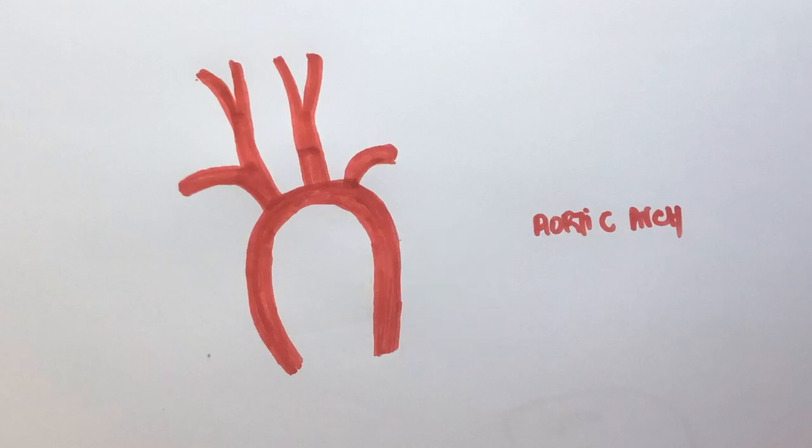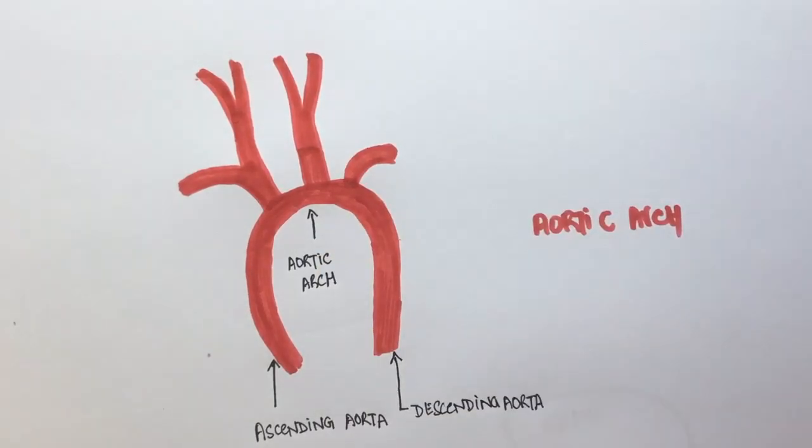This is the aorta. The aorta has three parts: the ascending aorta, the aortic arch, and the descending aorta.